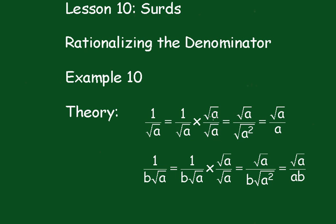Now we multiply 1 by root a, we just get root a. And here we'll get the square root of a squared which is a, so we've rationalized. The numerator is irrational, but the denominator is rational.